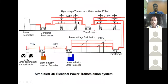Looking at the values: at the power station, the power is stepped up from 25 kV to 400 kV to reduce transmission and distribution losses. It is then stepped down after certain kilometers — the distance between stations can be hundreds of kilometers. To reduce distribution losses, it is stepped down to 275 kV.